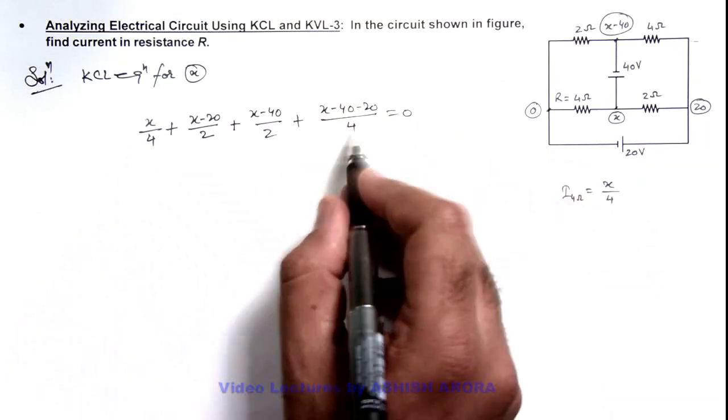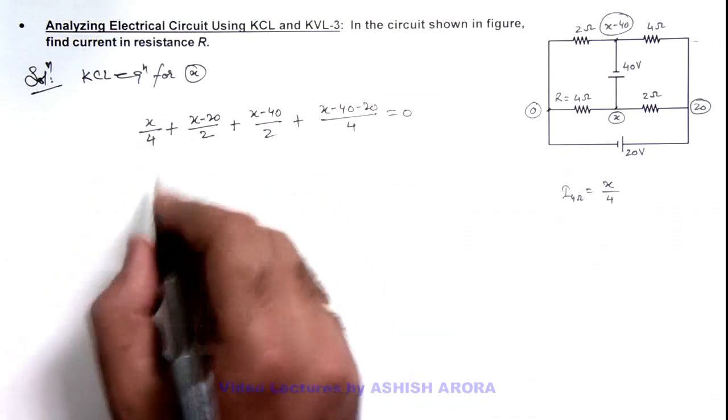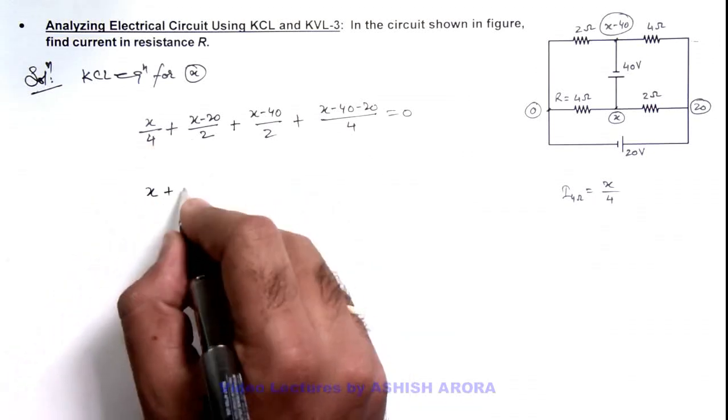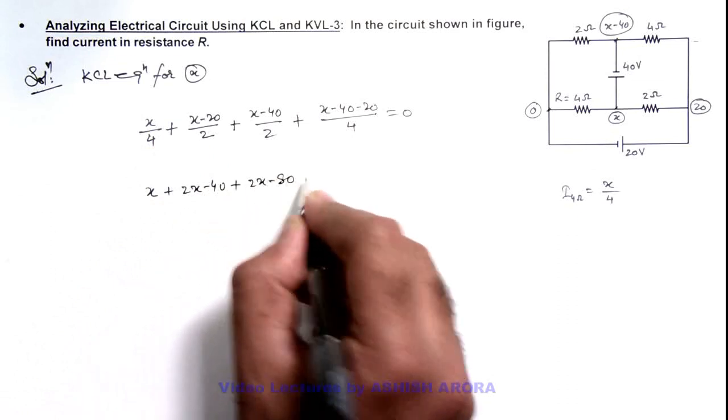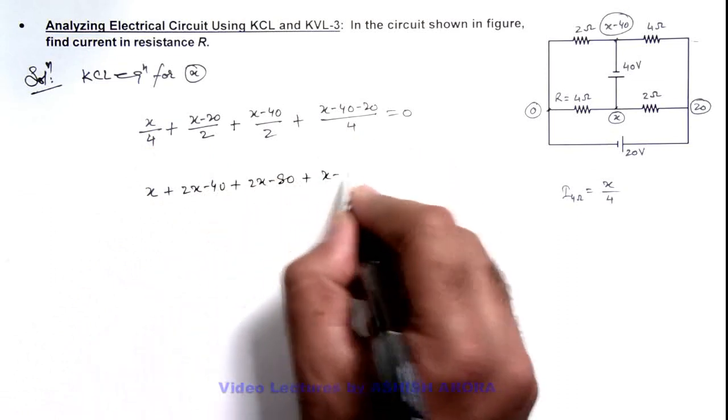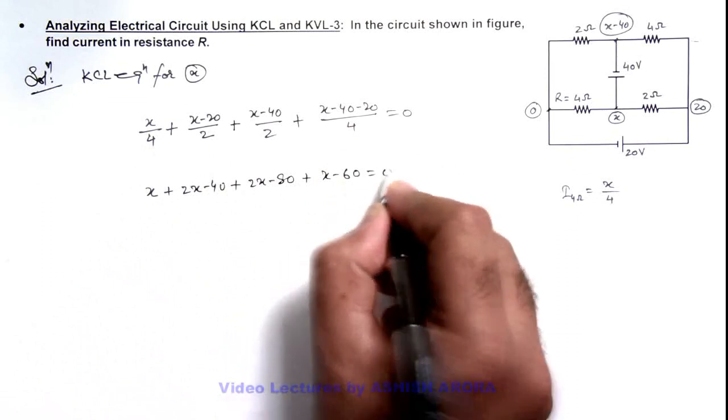If we simplify this by taking 4 as LCM, the result is x plus 2x minus 40 plus 2x minus 80 plus x minus 60 is equal to zero.